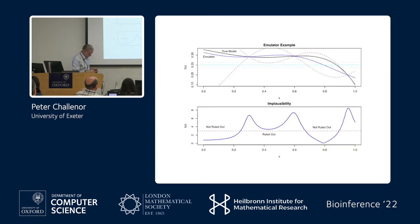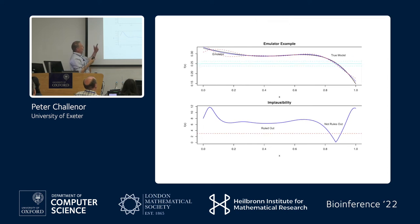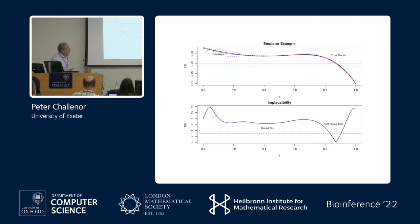Here's an example. This is my true model — the black line. I've got three model runs and a data point in cyan with some uncertainty on it. There's my emulator. This region is not ruled out because it's near the data; this region is not ruled out because my emulator is really uncertain out there. I add an extra couple of points, and the emulator now gets good here. Down here, the emulator uncertainty is basically just the data error — any more computer model runs are not going to help me.